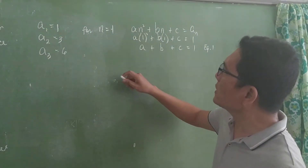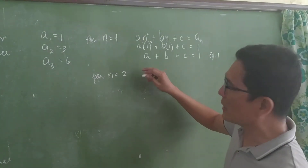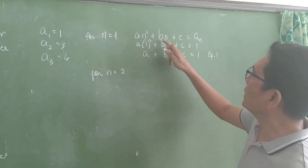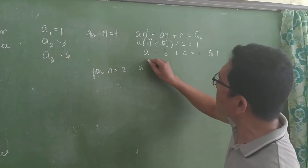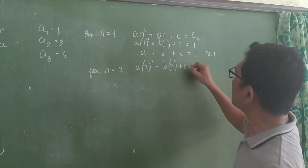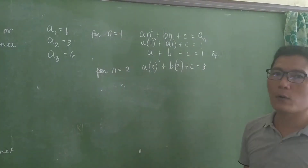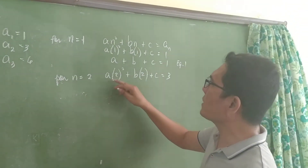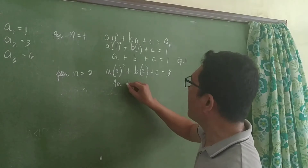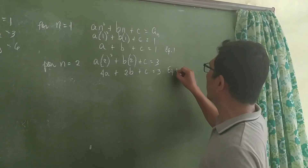For n = 2, substituting into the formula: a(2²) + b(2) + c = 3 — our second term is 3. So 4a + 2b + c = 3. This is our Equation 2.